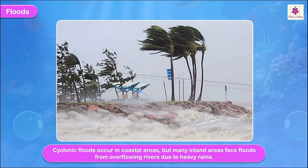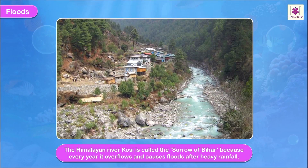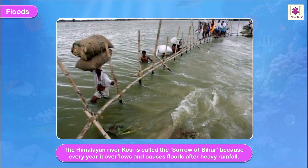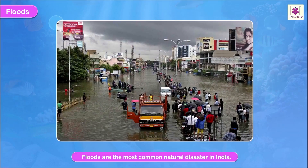Floods: Cyclonic floods occur in coastal areas, but many inland areas face floods from overflowing rivers due to heavy rains. The Himalayan river Kosi is called the 'Sorrow of Bihar' because every year it overflows and causes floods after heavy rainfall. To prevent floods, we can build dams and interconnected canal systems. Floods are the most common natural disaster in India.